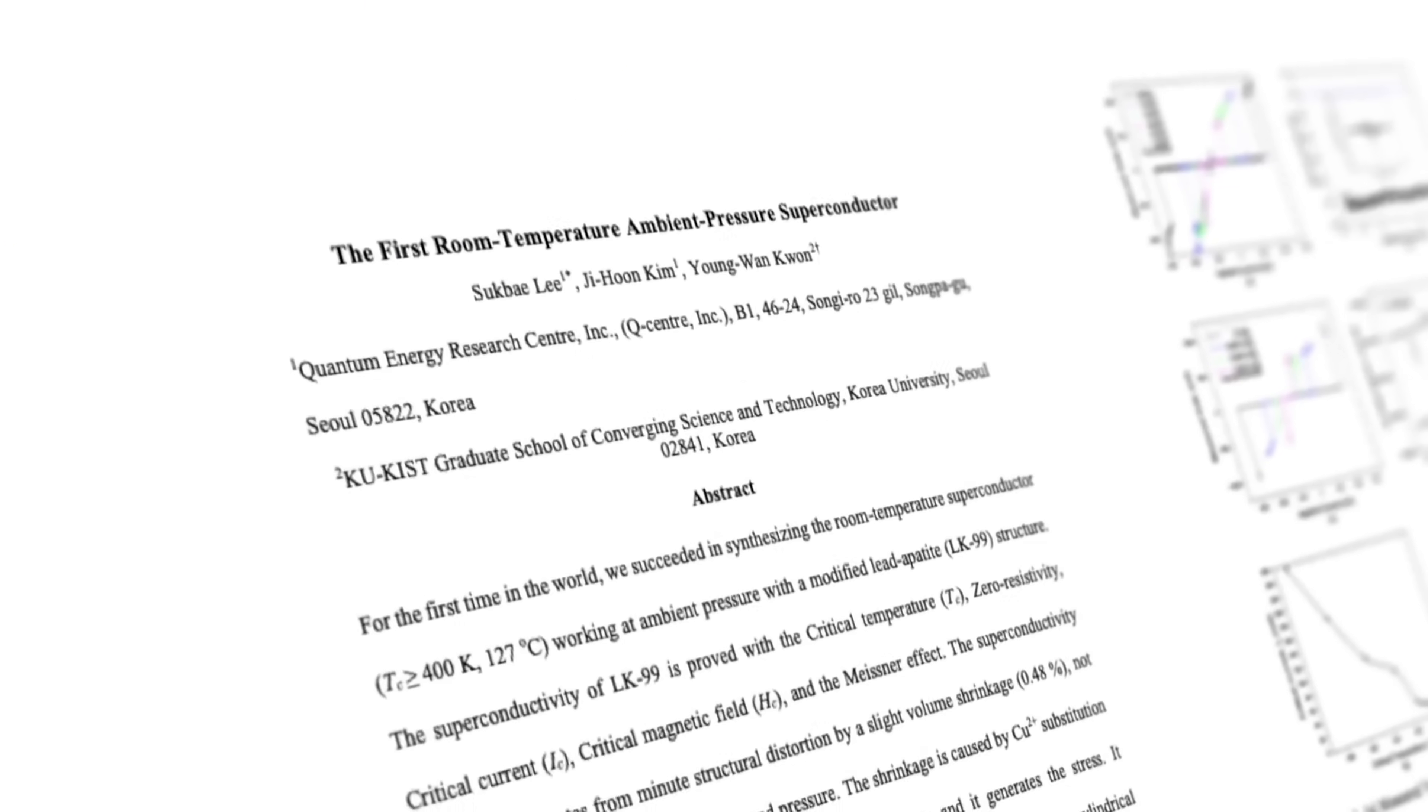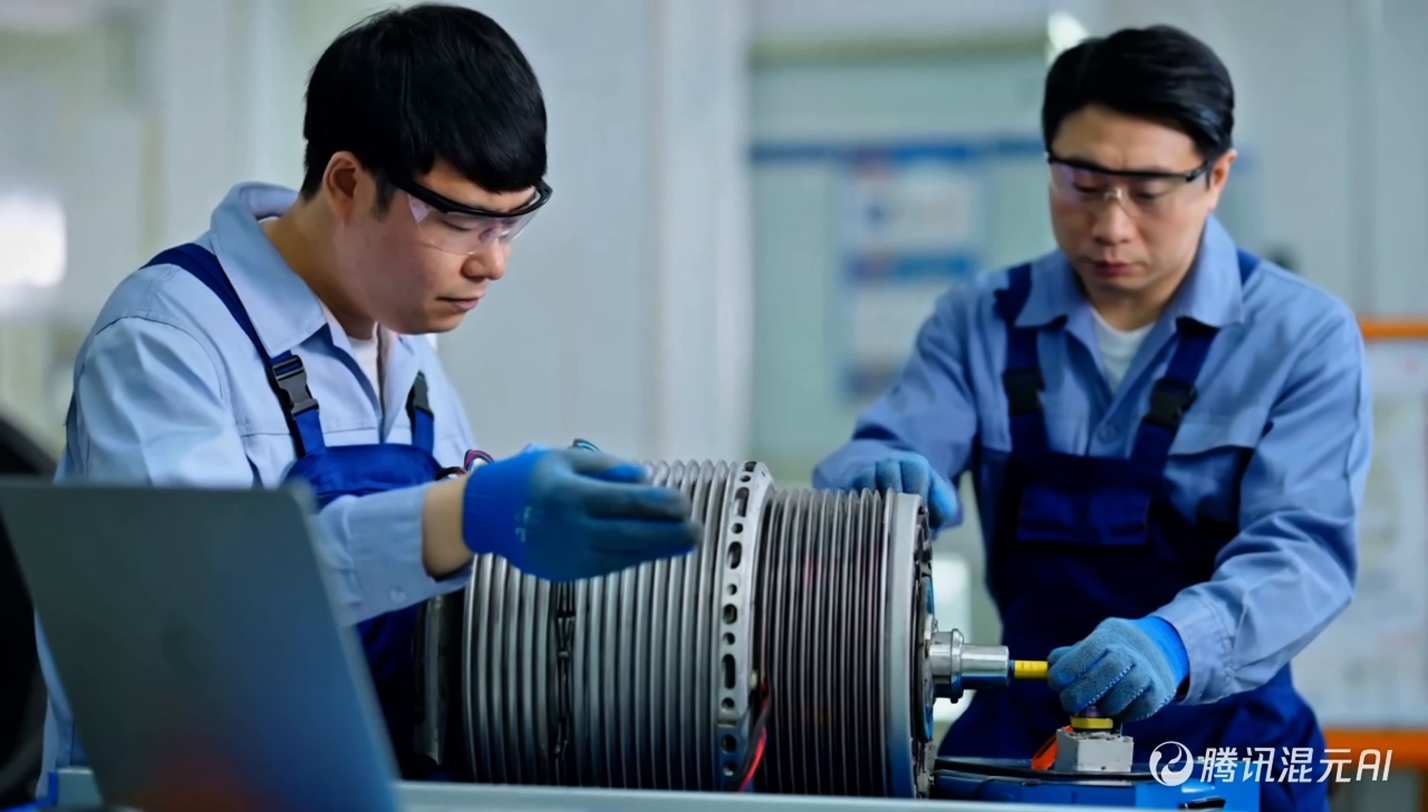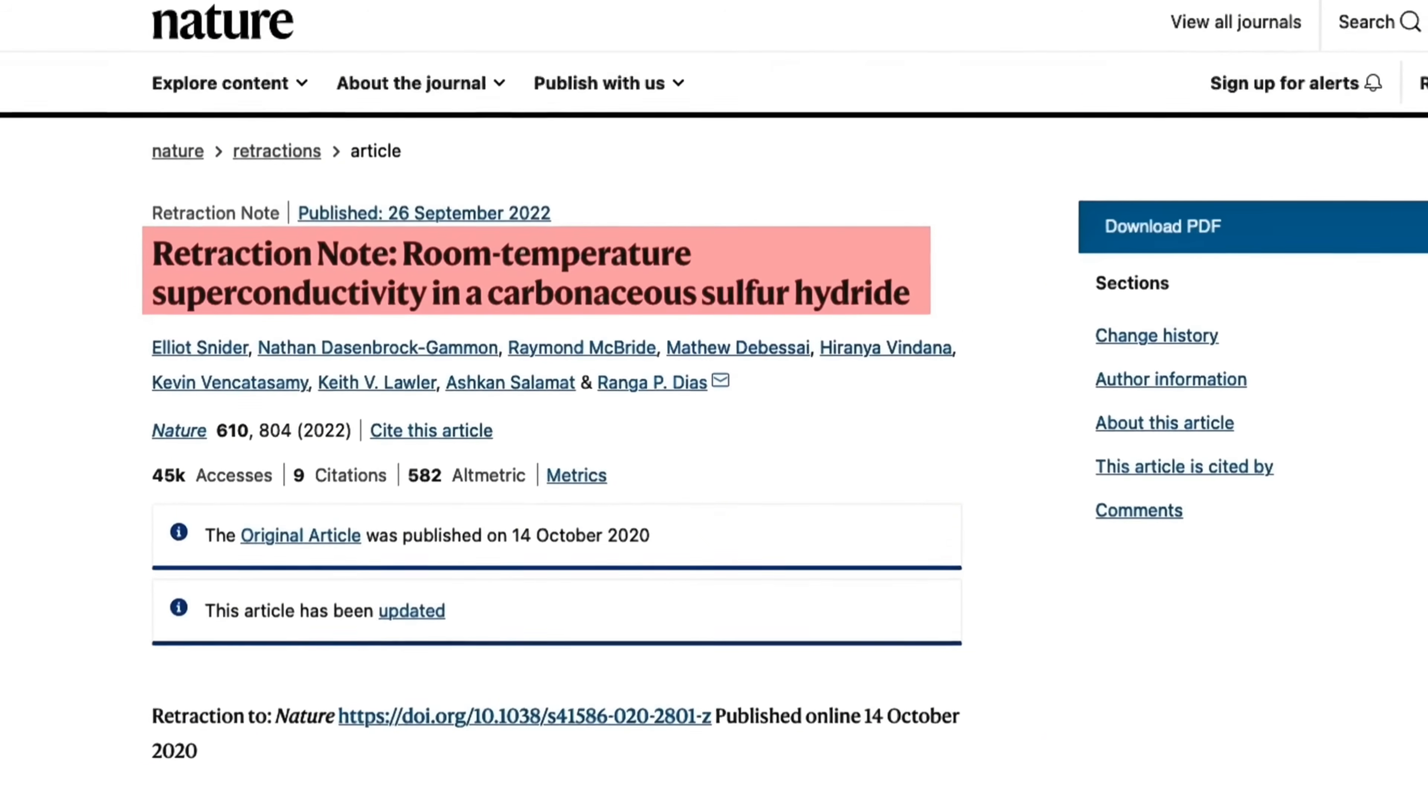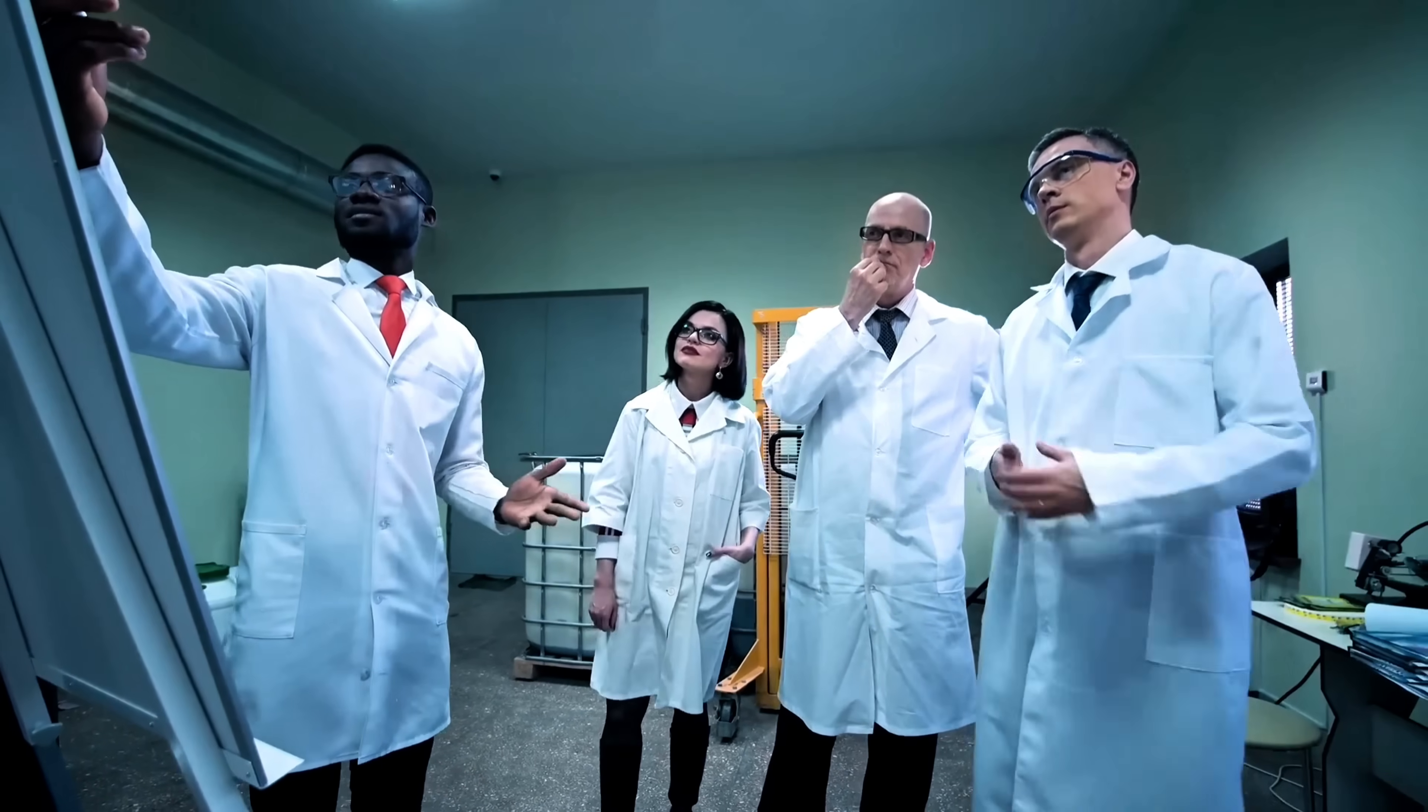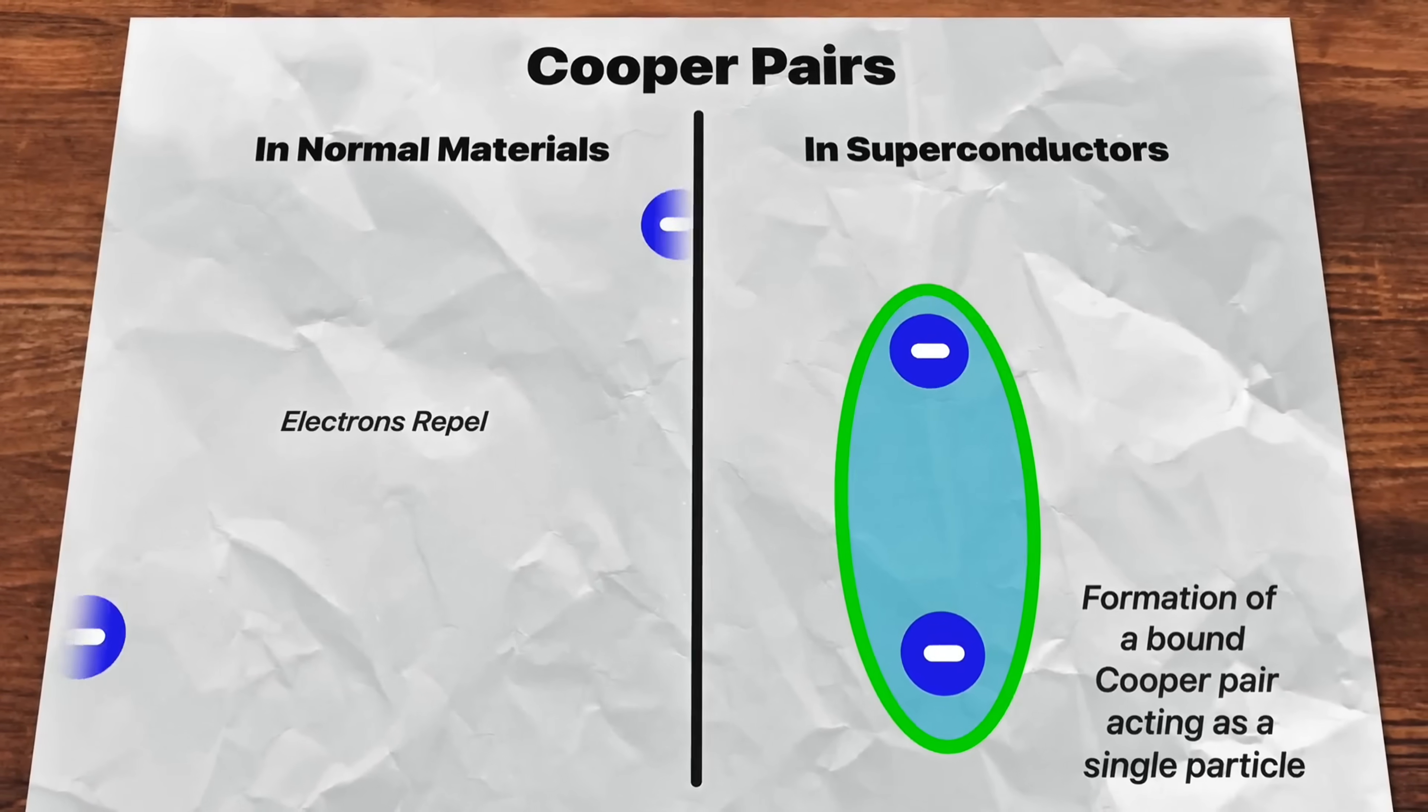LK99 started as a whisper. In mid-2023, two South Korean researchers claimed they had discovered a new material called LK99 with zero electrical resistance at room temperature, a finding that could change everything. The scientific community went crazy. A superconductor that didn't need to be plunged into liquid nitrogen or helium? In the past, superconductors only worked near absolute zero temperatures. But LK99 promised something unimaginable: ordinary temperature and pressure.